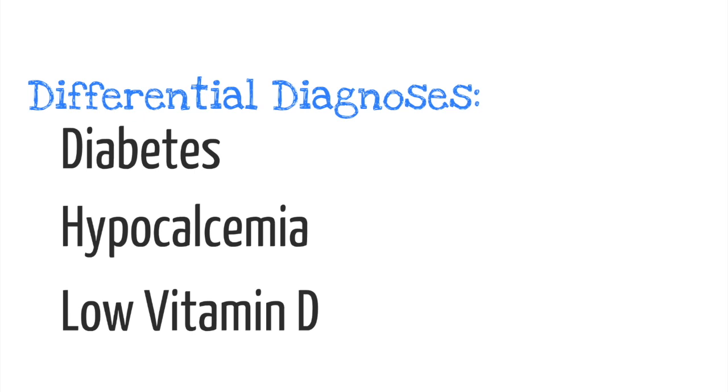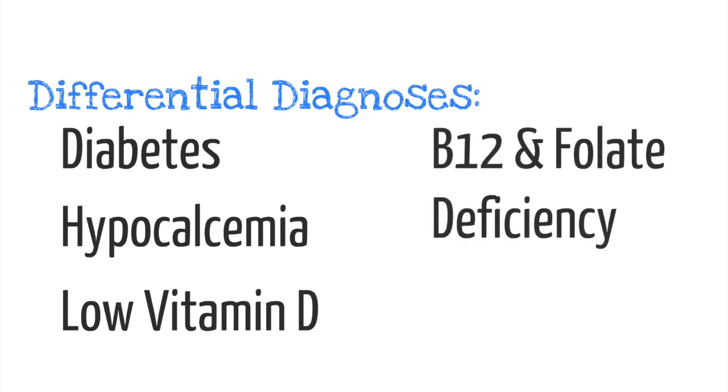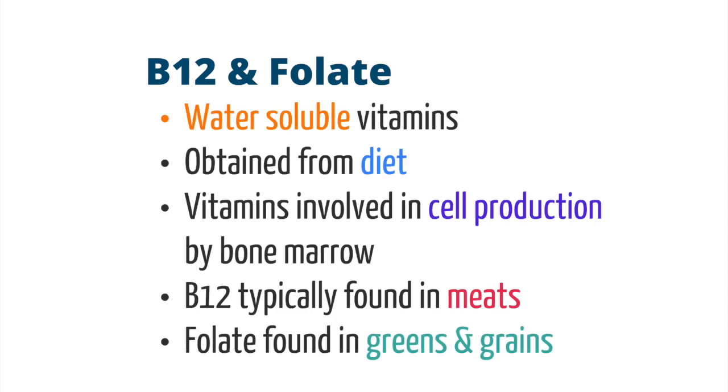Other relatively common deficiencies that can cause a similar picture are B12 and folate deficiencies. B12 and folate deficiencies will be our main focus for this episode. B12 and folate are water-soluble vitamins that we obtain from our diet. We need B12 and folate because they are required for the production of cells that are produced in our bone marrow, like red blood cells, white blood cells, and platelets. B12 is traditionally found in meats, while folate is typically found in greens and grains.